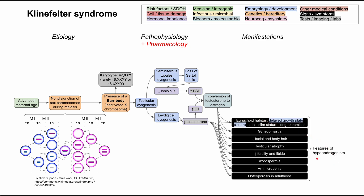The end result is many features of hypoandrogenism, and these are the main clinical manifestations of Klinefelter syndrome. Patients will have a eunuchoid habitus from delayed growth plate closure — also a result of low testosterone — so the patient will be tall with a slim stature and long extremities. They'll have gynecomastia, decreased facial and body hair, testicular atrophy, decreased fertility and libido, azoospermia, and possibly a micropenis — though it's normal to have a normal penis in Klinefelter syndrome. They'll also have osteoporosis in adulthood, again a result of low testosterone.